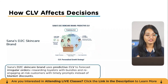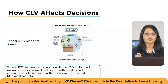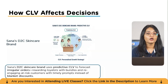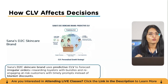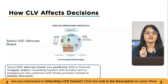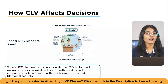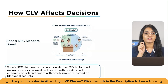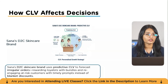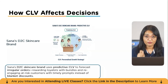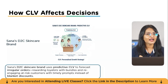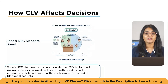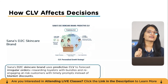Sana runs a D2C skincare brand. Her customers don't subscribe — they reorder when they need to, and purchases are irregular with some customers going quiet for months. Instead of averaging everyone together, which hides reality, Sana uses predictive CLV to forecast how many more orders each customer is likely to place and at what average value. That lets her segment smartly — nurturing likely long-term loyalists with education and bundles, while reactivating at-risk customers with timely prompts rather than blanket discounts.